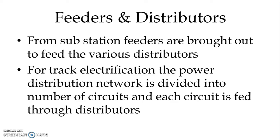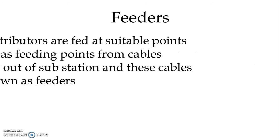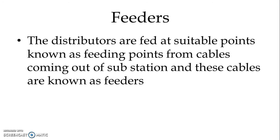For direct electrification, the power distribution network is divided into a number of circuits and each circuit is fed through distributors. The cable or overhead line coming out from the substation to supply power at certain fixed points is known as a feeding post. We have several feeding posts, and we take overhead lines or cables from the substation up to the feeding post to supply power for the distributors. The distributors are fed at suitable points known as feeding points from cables coming out of the substation, and these cables are known as feeders.